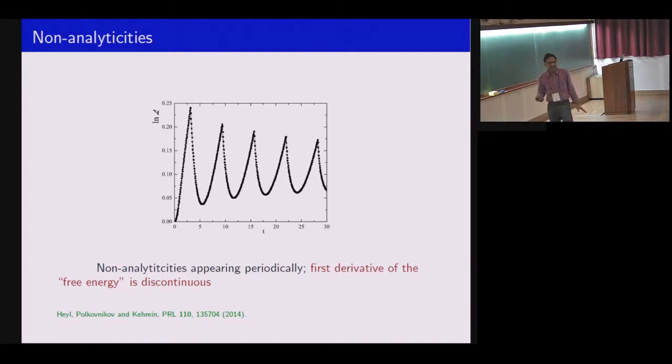One can talk about a topological order parameter constructed out of this Loschmidt overlap that shows a quantized jump at every dynamical quantum critical point. To summarize dynamical quantum phase transition: start with a quantum state I0, evolve with some different Hamiltonian. After some instant of time, take the overlap with the initial state. See whether the state vanishes. The log of that quantity gives you non-analyticities. Those non-analyticities I am calling dynamical phase transitions.